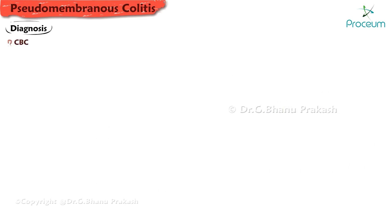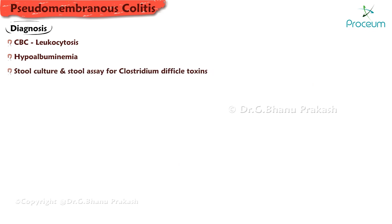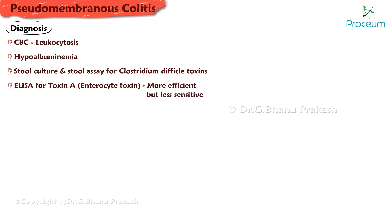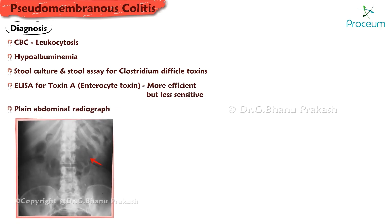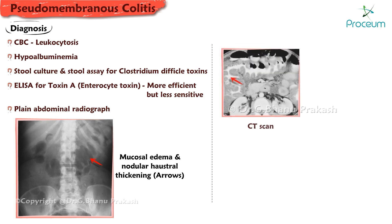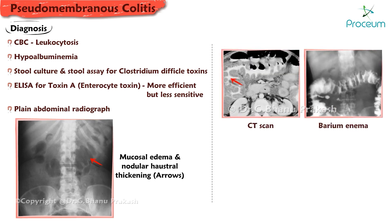For diagnosis, a complete blood count shows leukocytosis, and hypoalbuminemia is a common finding. Stool culture and stool assay for Clostridium difficile toxins can be performed; however, enzyme-linked immunosorbent assay for toxin A (enterocyte toxin) is more efficient but less sensitive. Plain abdominal radiograph may show mucosal edema and nodular haustral thickening. CT scan and barium enema also help in identifying mucosal lesions.